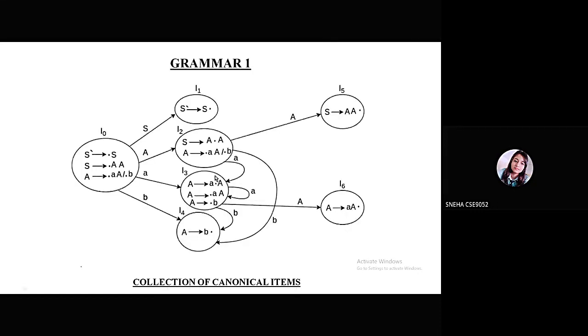For the canonical items, there are many states from I0 to I6, total seven states. In the I0 state, we are writing all the augmented grammar or the productions as it is. From there, we have to try to reduce the production to the end nodes. First of all, for the input S, it is going to state I1.